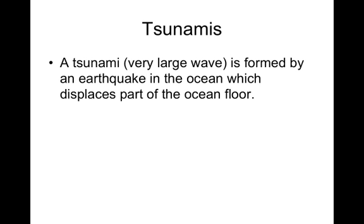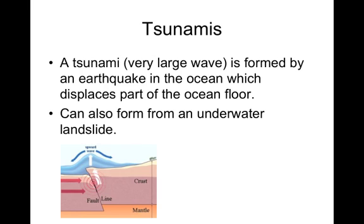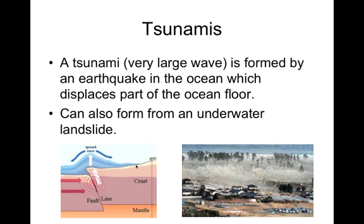The first one we're going to talk about are tsunamis. They are very rare in California. A tsunami is a very large wave formed by an earthquake in the ocean which displaces or shifts part of the ocean floor. It can also form from an underwater landslide. Because California is on the coast and has a large fault to the north, there is potential for an earthquake off the coast. If the earthquake happens along a fault line in the ocean, when that plate moves it can cause an upward wave that spreads out and does damage to the coastline. This is a picture from a tsunami that hit Indonesia about 10 years ago.